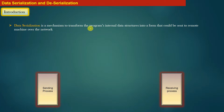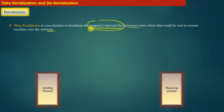Let us start with the introduction to data serialization and data deserialization. Data serialization is a mechanism to transform the program's internal data structures into a form that could be sent to a remote machine over the network. Note the word here: program's internal data structures. Suppose you are running some program and your program may maintain certain linked lists, queues, trees, or many other data structures. Those are called program's internal data structures, and they manage the program data.